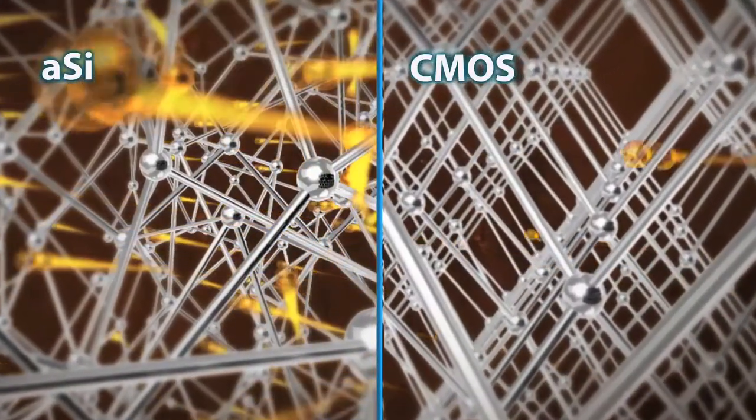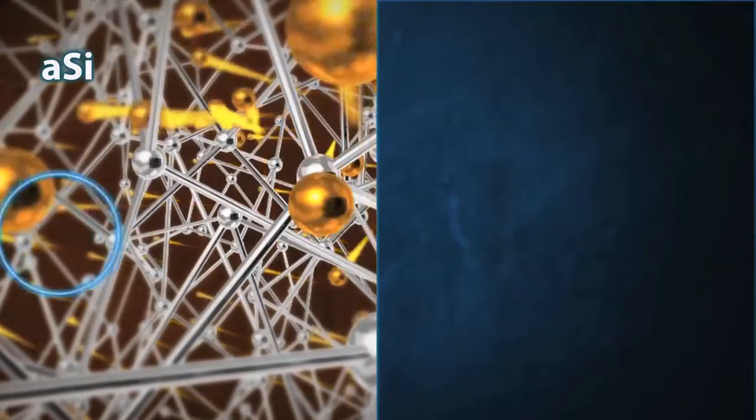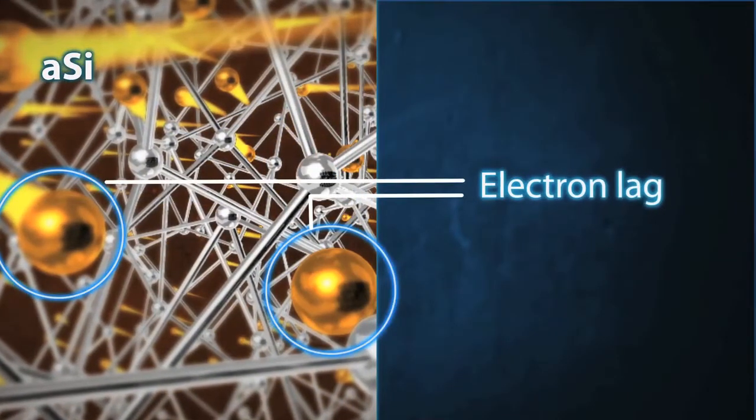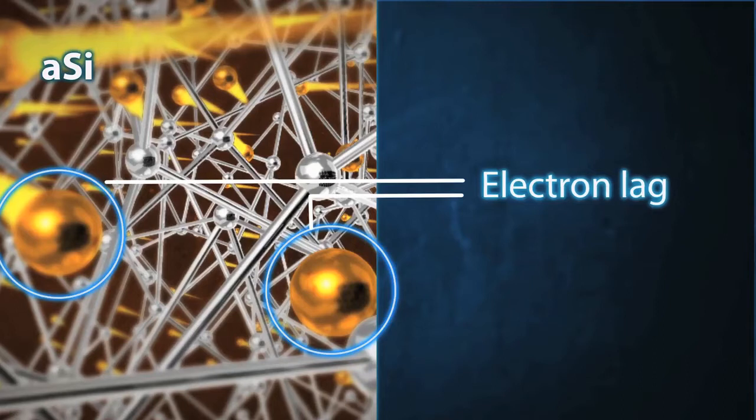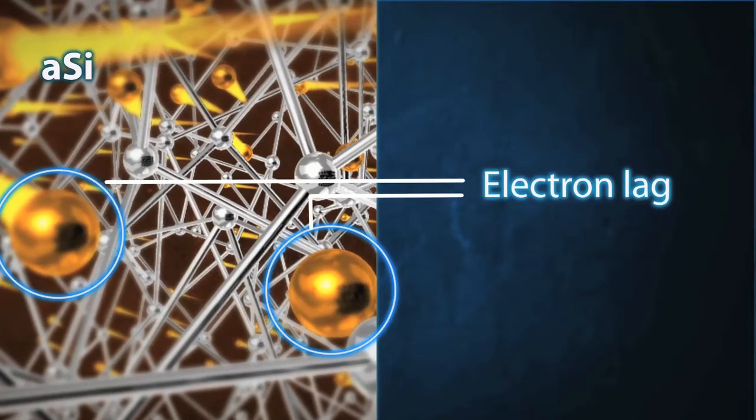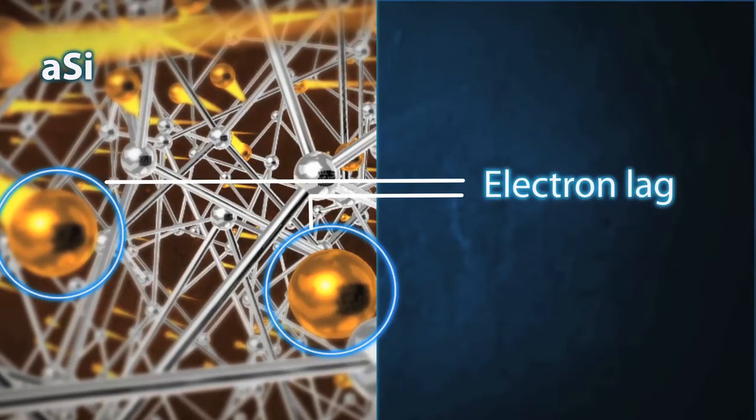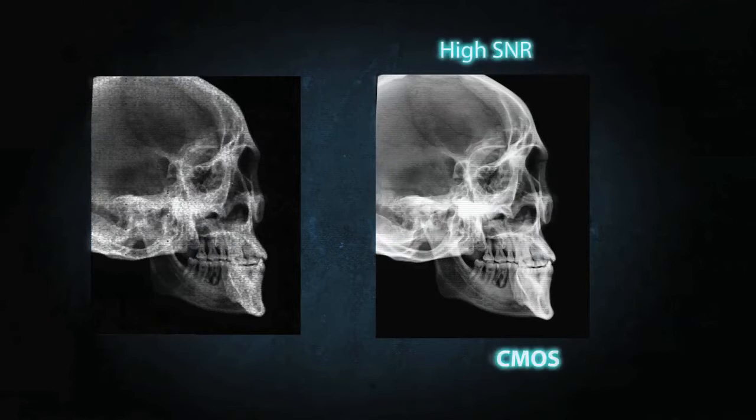Electrons that get trapped are called lag, and they degrade image performance. Lag can show up as the afterglow of previous images, corrupting new captures. Another key advantage of crystalline silicon is the low amount of noise it creates when compared to other technologies.